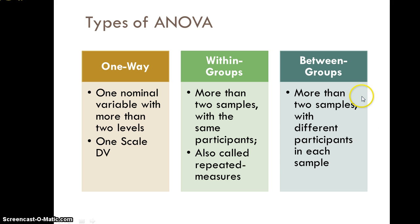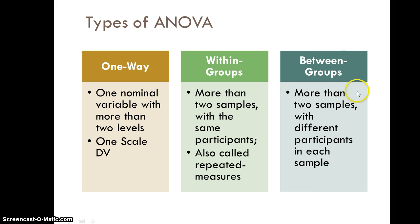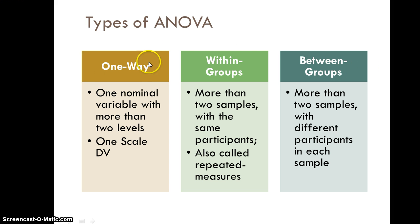Lastly, we can have a between-groups factorial ANOVA, where you have more than two samples with different participants in each sample — analogous to a between-groups design. You could have a one-way within-groups or a one-way between-groups analysis of variance. Factorial ANOVA is more complicated and will be covered in Chapter 14. For now, you can either have a between-groups design or a within-groups design.